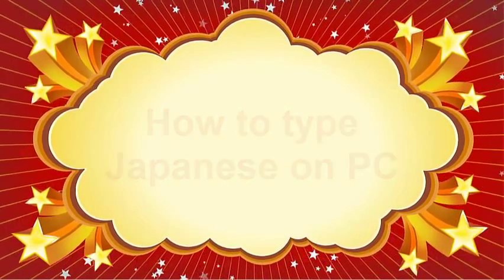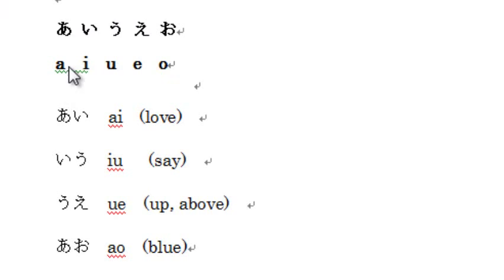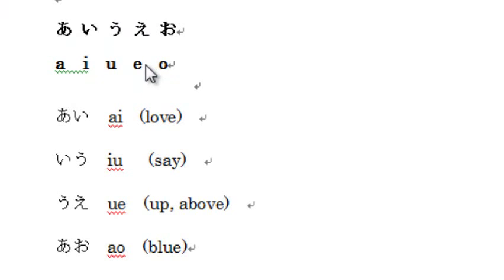Let me begin with the Japanese vowels: あ、い、う、え、お. You just type 'a' for あ, 'i' for い, 'u' for う, 'e' for え, 'o' for お.